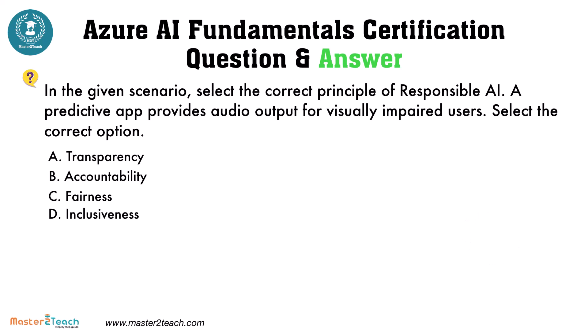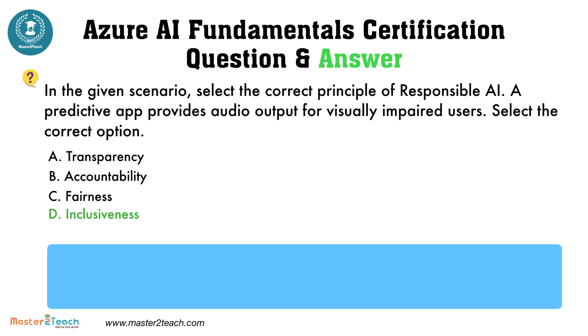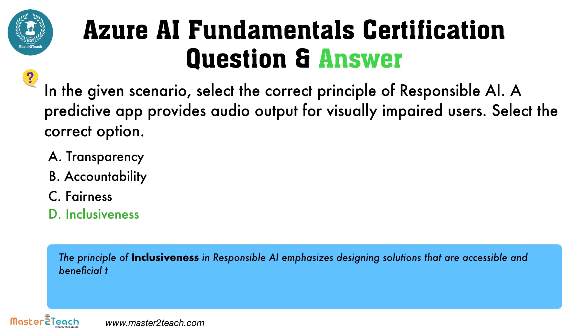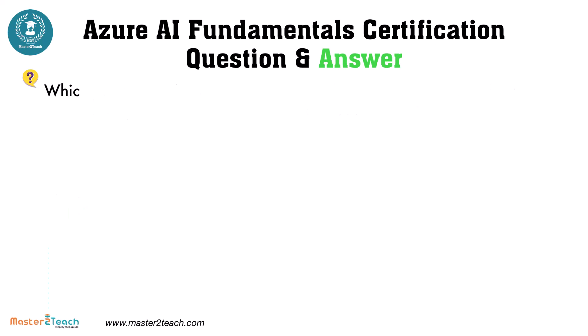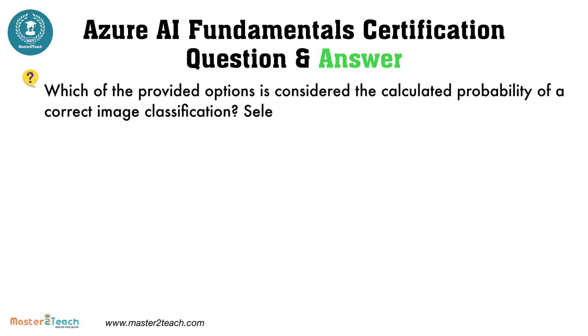The correct answer is Inclusiveness. The principle of Inclusiveness in Responsible AI emphasizes designing solutions that are accessible and beneficial to a diverse range of users, including those with disabilities. A predictive app that provides audio output for visually impaired users exemplifies this principle by ensuring the technology is usable and helpful for all individuals, regardless of their abilities.